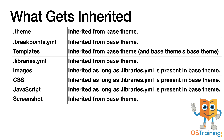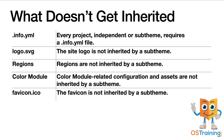Here's what's not inherited: the actual .info.yaml file — and as you know, you have to have one of those. The logo is not inherited. Any regions that have been created in your base theme will not be inherited, which means you'll need to define all of them. The color module, and of course, the favicon.